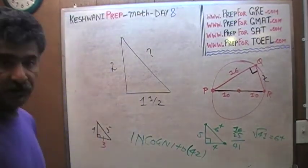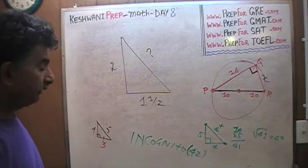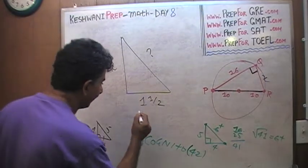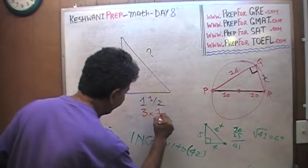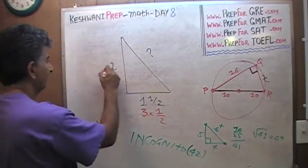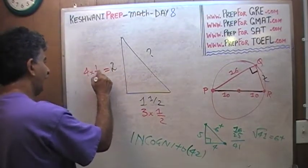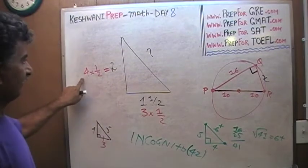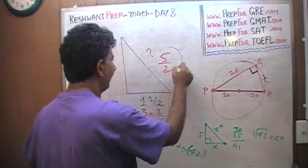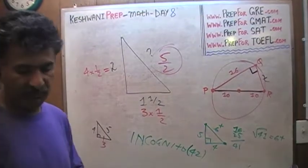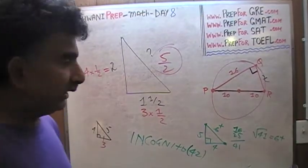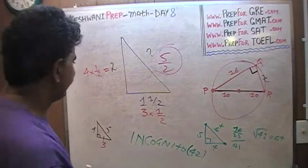One more example: a triangle with sides 1.5 and 2. Is this a 3-4-5 triangle? Yes — 1.5 is 3×½ and 2 is 4×½, so the hypotenuse must be 5×½ = 2.5. That's the missing side: 2.5. And if you're quick enough to recognize it, you can use that knowledge immediately.